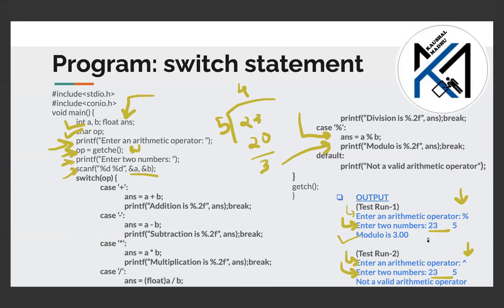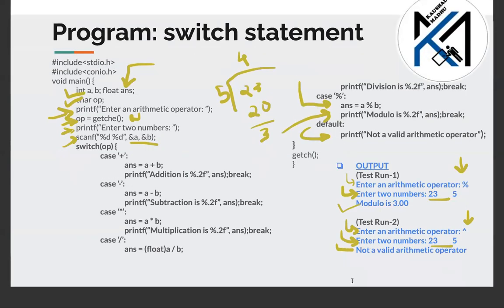In the second run, we input bitwise XOR as the operator. Since XOR is not a valid arithmetic operator, the default block executes and displays 'Not a valid arithmetic operator'. So this program is essentially a mini calculator. In summary, you can use a switch statement as an alternative to multiple if-else statements. Thank you.